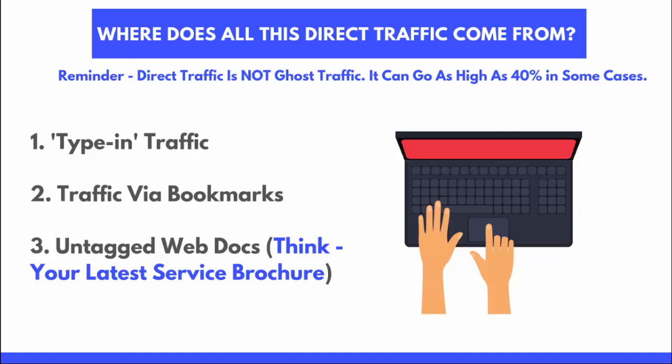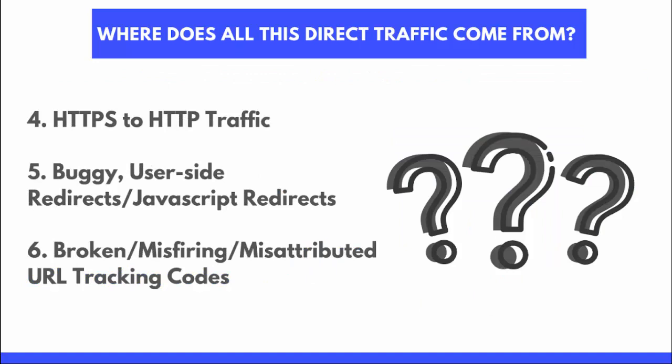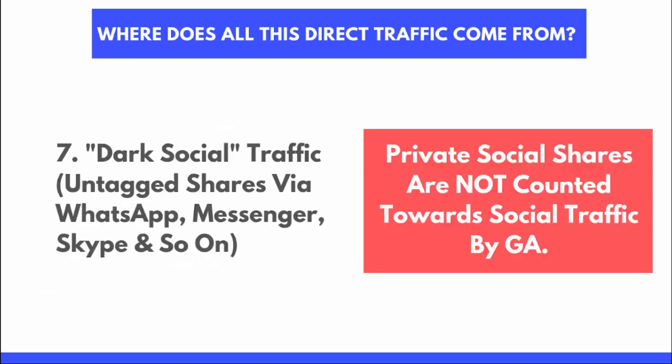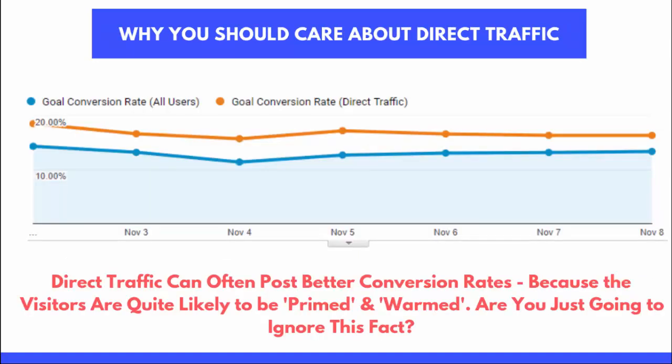If you have untagged web documents — for example, your latest service brochure or anything posted online in a document format without a referral tag — that will also appear as direct traffic. Even Google Docs, for example, will register as direct. Then there are HTTPS to HTTP issues, which you should already have resolved, along with buggy or JavaScript redirects — not too common, but worth noting if you see direct traffic spiking. Additionally, broken, misfiring, or misattributed URL tracking codes can push visits into direct. Finally, there's dark social: untagged messenger apps like WhatsApp — the most common example — are not counted as social traffic because they come from secured sources rather than Facebook or Twitter.